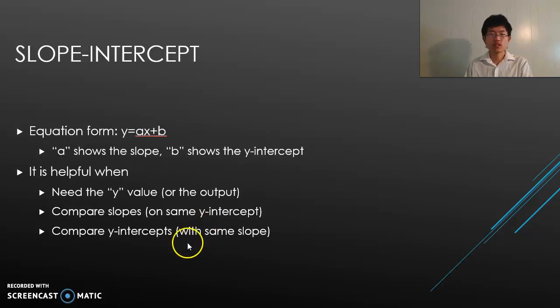Alright, so the first form I'm going to introduce is the slope-intercept form. It has a slope and it has an intercept, and that's why it's called slope-intercept form. The equation looks like this: y = ax + b. a is the slope, b shows the y-intercept. It's often helpful when you need a y value.